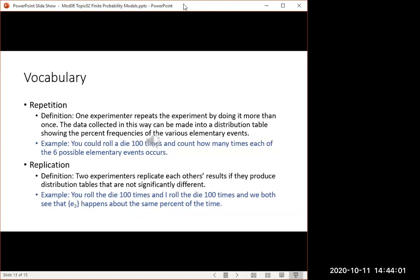Repetition of the experiment is doing it over and over again. Like if you roll the die 100 times, you've repeated the experiment 100 times. Now, replication is something different. Two experimenters have replicated each other's results if each one of them independently rolled the die many times. We've each done many repetitions. And then if we see that we're getting the same percentages, percent frequencies from the experiment are coming out the same or close to the same, then we have replicated each other's results.